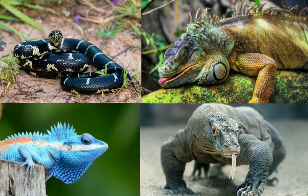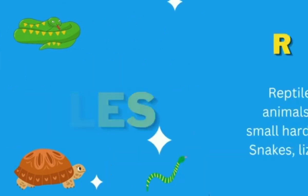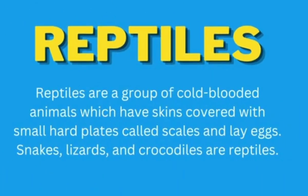Examples of Reptiles. Reptiles are a group of cold-blooded animals which have skins covered with small hard plates, called scales, and lay eggs. Snake, lizard, and crocodile are reptiles.